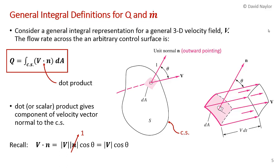So now we move on to the general integral definitions for volume flow rate and mass flow rate. These definitions are for a general three-dimensional vector velocity field. In this case, I'm considering an arbitrary control surface CS. This is actually Figure 3.1 from your textbook. What we're considering is a vector field V passing through this arbitrary control surface. And n is the outward pointing normal at that small area dA, and theta is the angle between the velocity vector and the outward pointing normal to the surface.